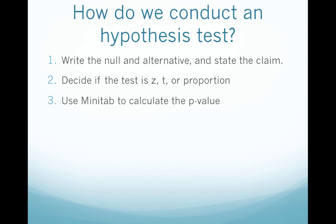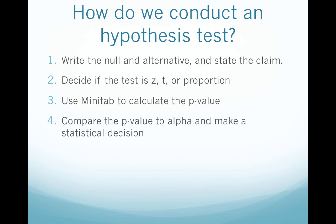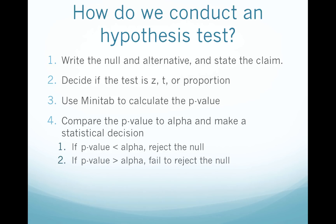Step three: use Minitab to calculate the p-value. Step four: compare the p-value to alpha and make a statistical decision. If the p-value is less than alpha, we reject the null. If the p-value is greater than alpha, we fail to reject the null. These are our only two decisions — every single time you do a hypothesis test, you will either reject the null or fail to reject the null.